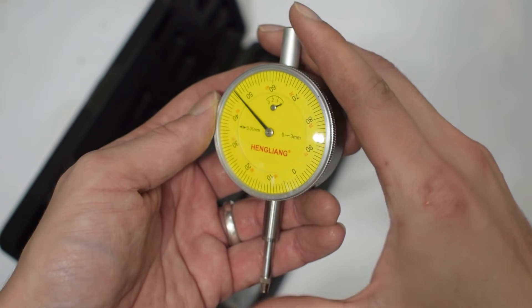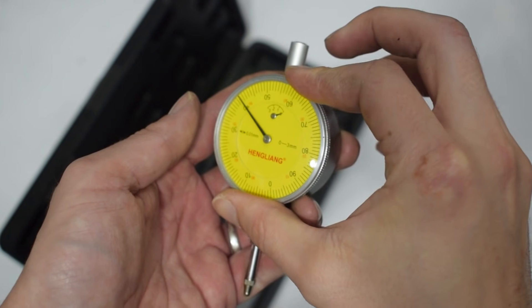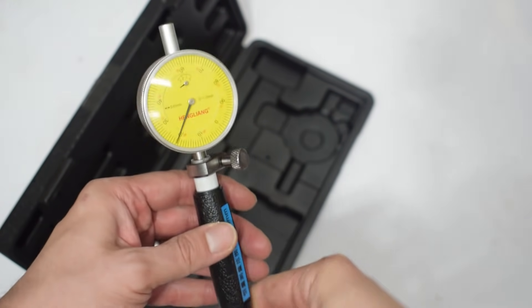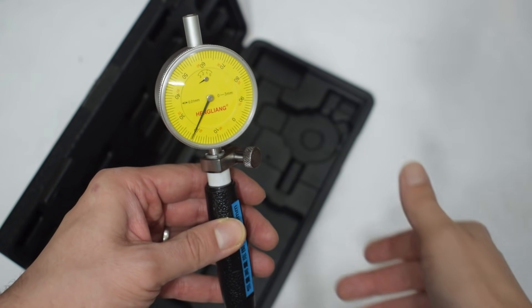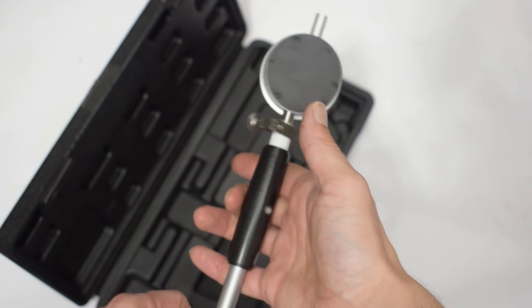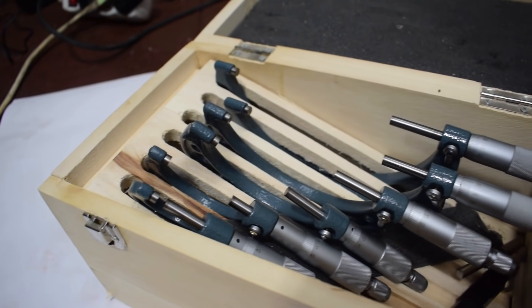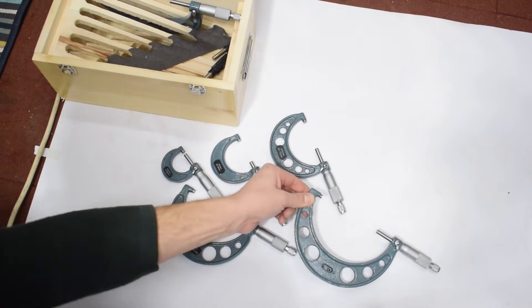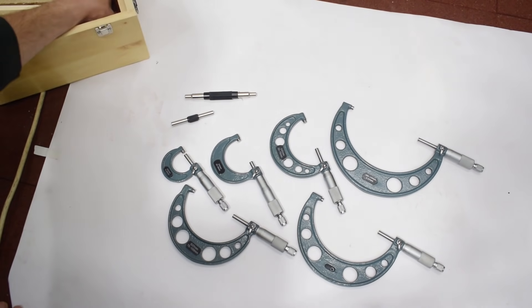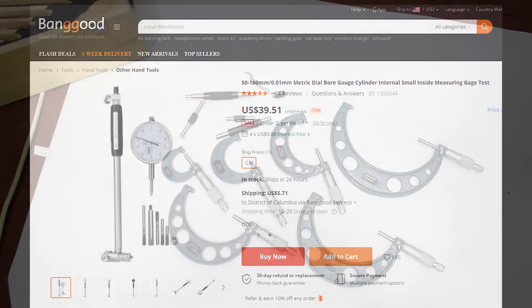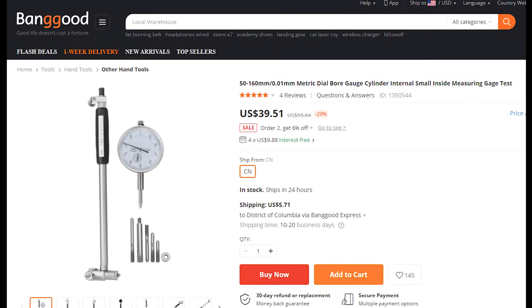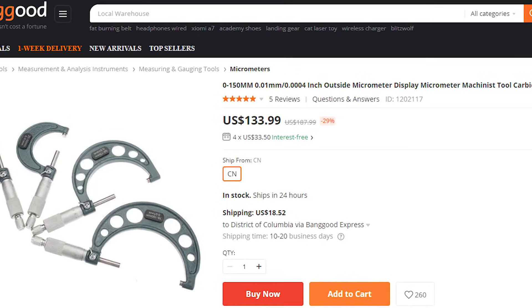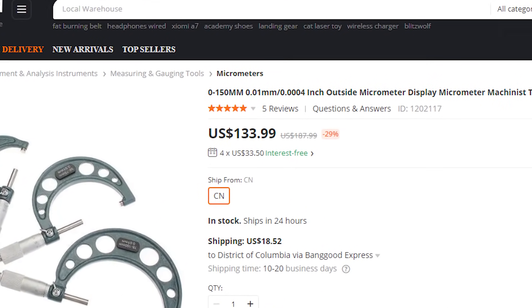But dial bore gauges and micrometers are expensive. How can a DIY car enthusiast justify their cost when they won't be using them often? Well this is where sites like Banggood come in. I got my dial bore gauge and set of micrometers for an extremely affordable price from banggood.com. Of course these aren't professional grade tools but you really don't need professional grade tools anyway. You won't be using them on a daily basis and we're not really trying to start a machine shop business here. These are perfectly adequate and accurate tools for our purpose. So if you want to learn a new skill and have actual insight into the condition of your engine you can check these tools out by clicking on the links in description and the pinned comment.